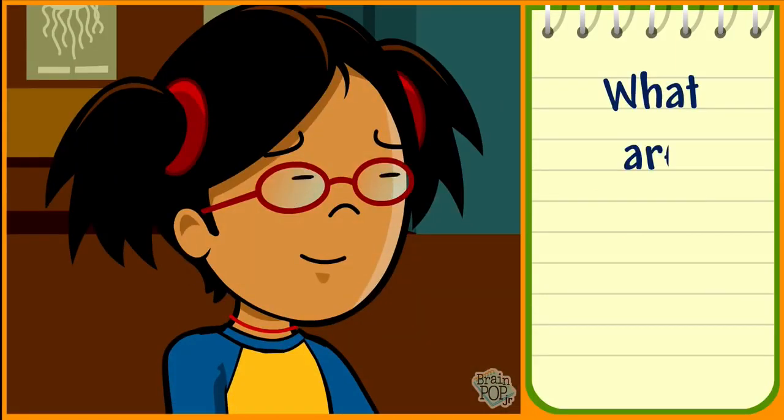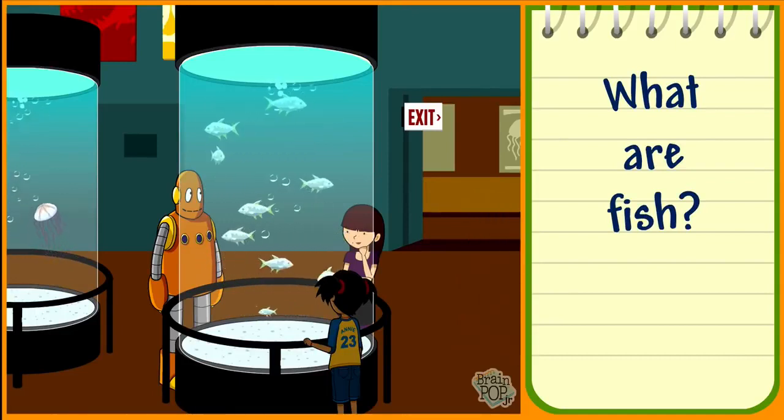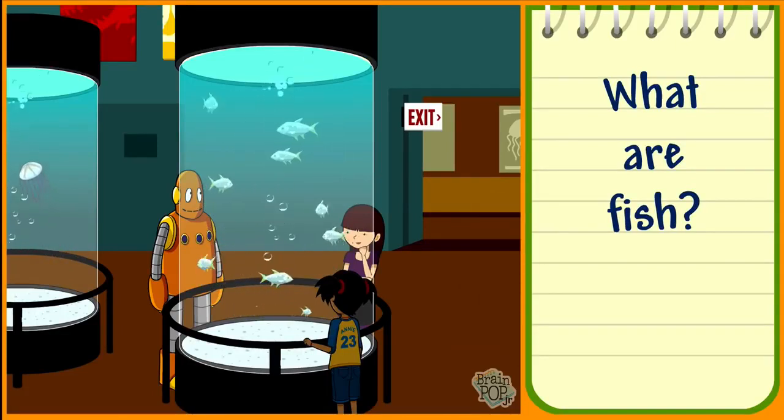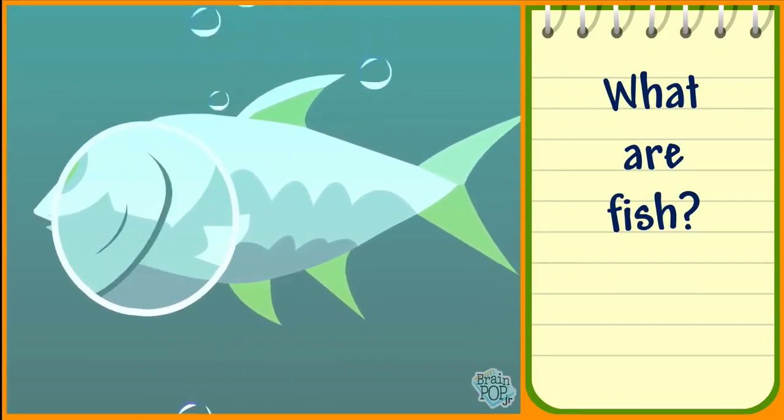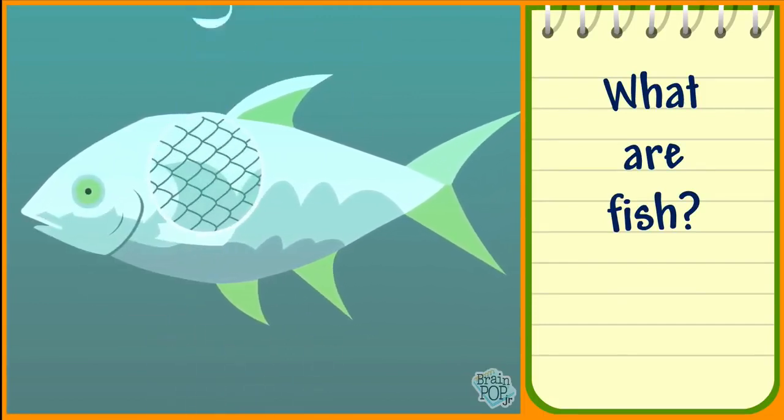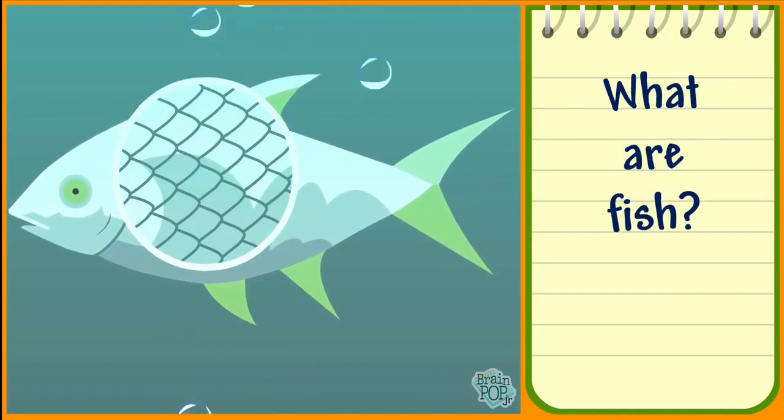What are fish? Most fish are vertebrates that live in water. Fish have gills to help them breathe and take in oxygen out of the water. Many have scales, which help them move through the water.